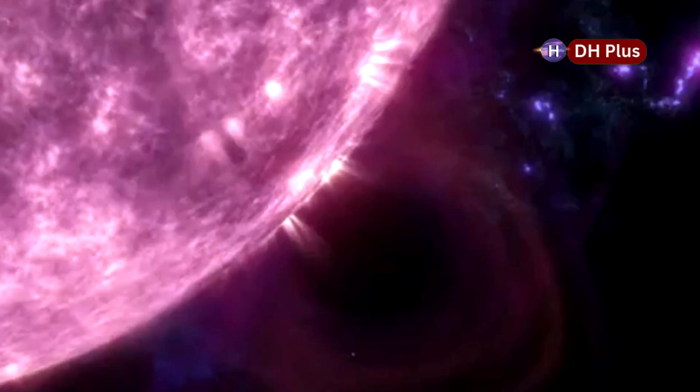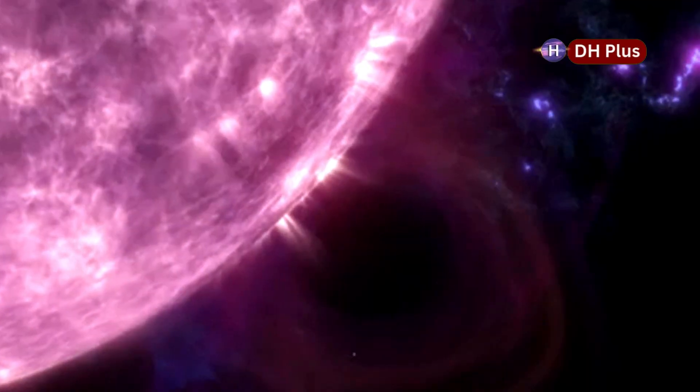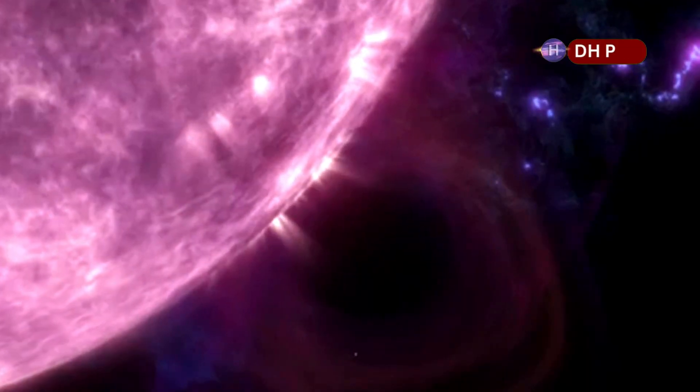And if you could travel around it at the speed of light, it would take almost nine hours to complete one loop. In comparison, making the same trip around the sun would take only 14 and a half seconds. Some estimates put Stevenson 2-18 at being 2,150 times the radius of the sun.